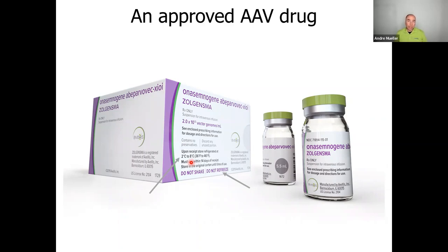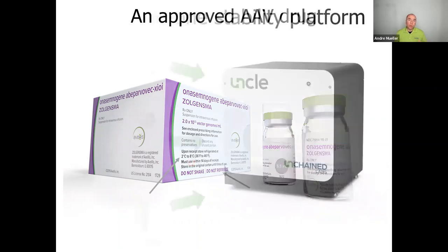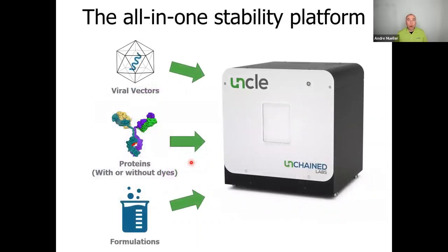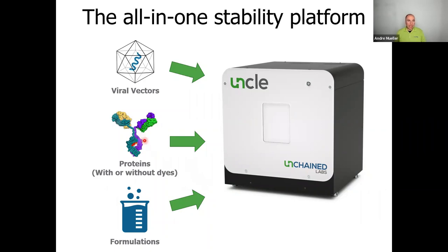What can we bring to the table to help you work on this? Enter UNCLE, our all-in-one stability platform. We can use it to assess the stability of viral vectors, but also other proteins, using dyes and protein intrinsic fluorescence. UNCLE is very flexible, and stability is nothing without formulation — we can also characterize the effect that different formulations have on the stability of either proteins or viral vectors.